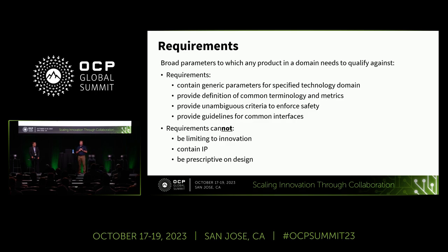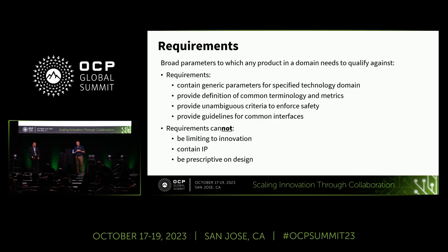Unambiguous criteria to enforce safety is obviously a top priority in all of our designs. And then guidance for the common interfaces, which really is the key part of the scaling of this innovation through collaboration. If we want this to take off and be a truly hyperscale-style solution, all of these interfaces need to be combined and interoperable. What can't a requirements doc contain? It cannot be limiting to innovation, cannot contain any IP, and cannot be prescriptive on design. This paper is a reflection of all of those requirements.